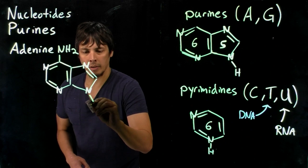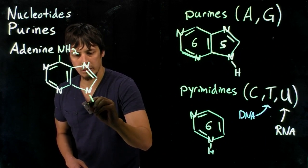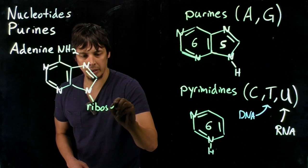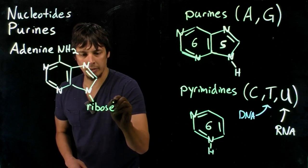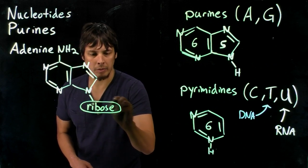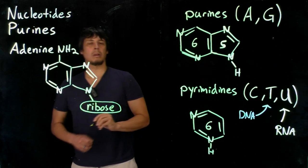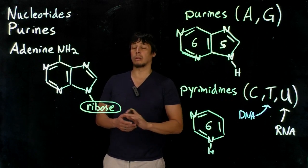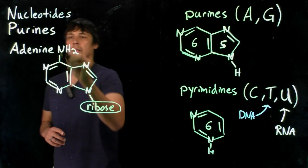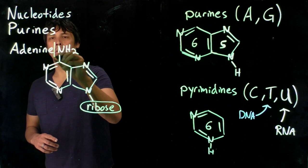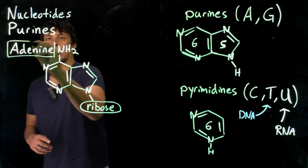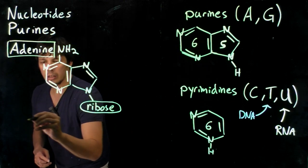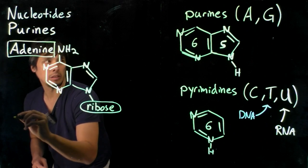This nitrogen is what forms the glycosidic bond with the ribose of the nucleotide. So this is adenine. The other purine is guanine.